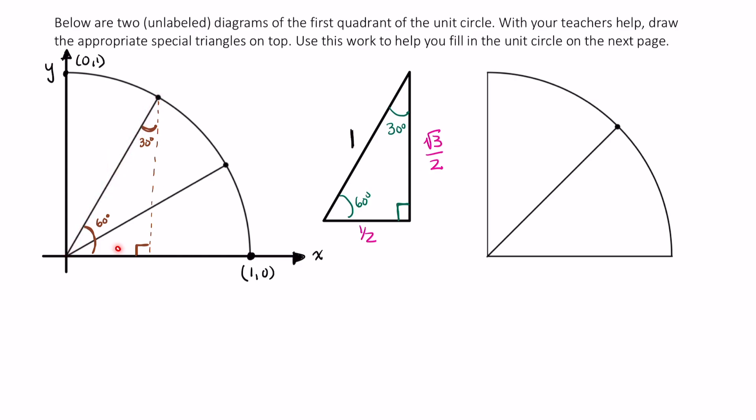This looks identical to our picture. I know that the x value, this distance from 0 to x, that's just 1 half. And that gives me the x-coordinate of this point as 1 half.